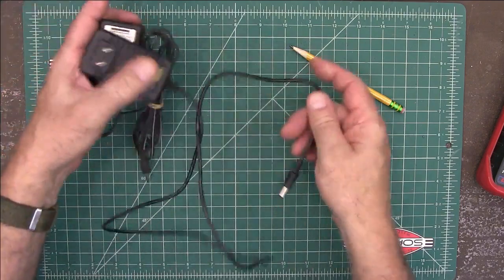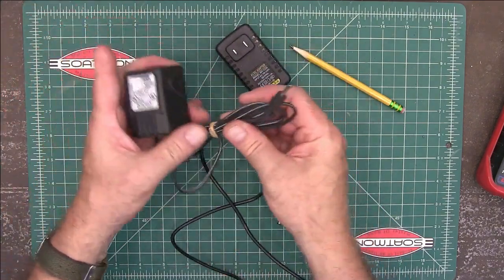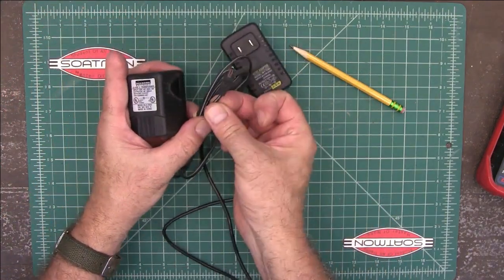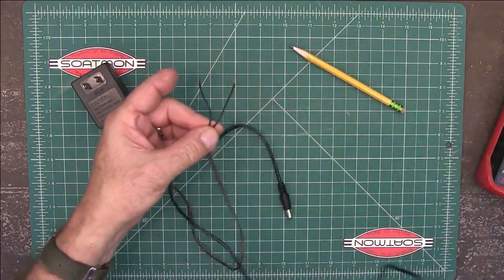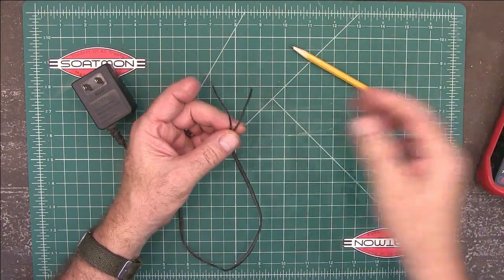So let me show you. So then you've got something like this, and it's got an end on it like that. Okay, so you just cut that off and then strip those wires like this.